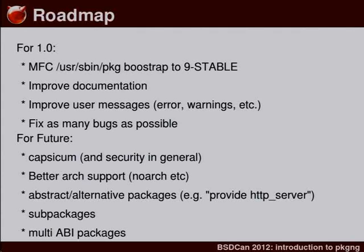What still needs to be done for 1.0 is improving user messages. We still have a lot of messages that are mostly technical warnings — like SQL conflicts — that are good internally but not useful to users. It's mostly about detecting problems and instead of printing what SQLite or LibArchive says, providing user-friendly messages. The more people test Package NG now, the better the messages will be. We're close to a release candidate and want Package NG 1.0 by summer.